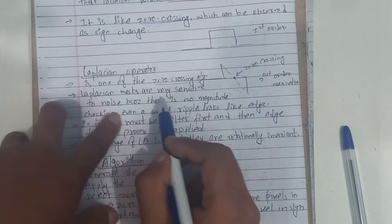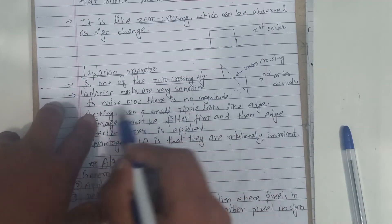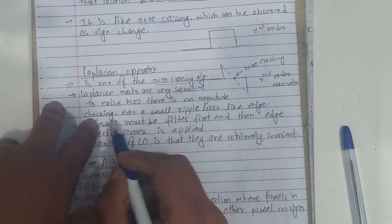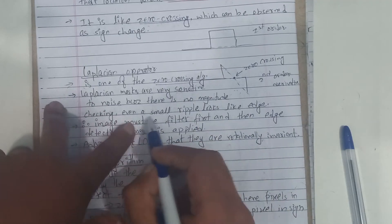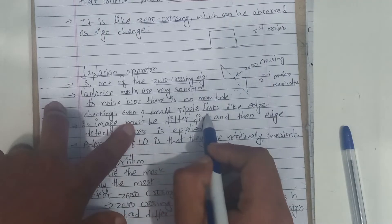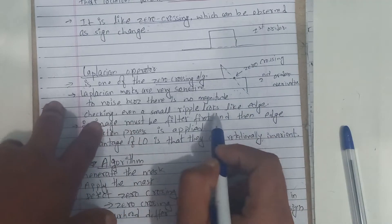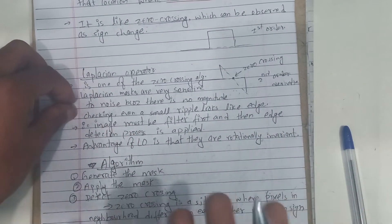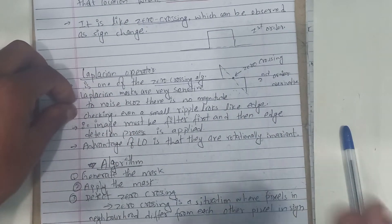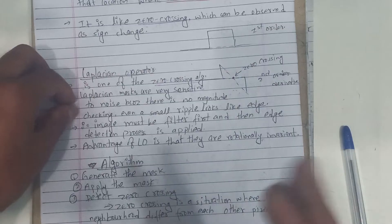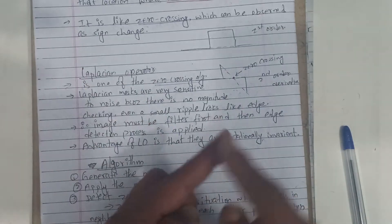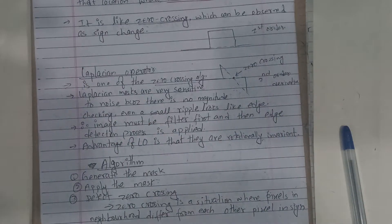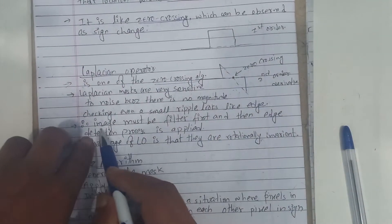Laplacian masks are very sensitive to noise because there is no magnitude checking — even a small ripple looks like an edge. Second order derivative is very effective but also very sensitive.